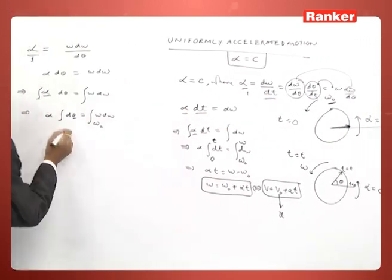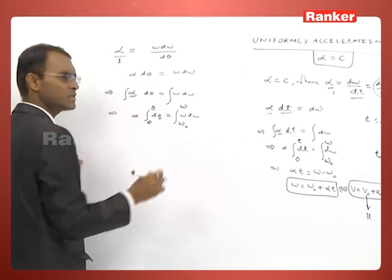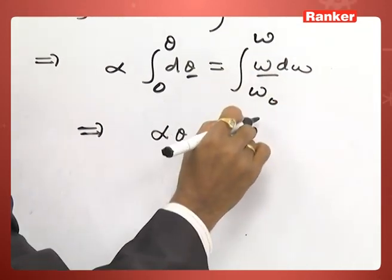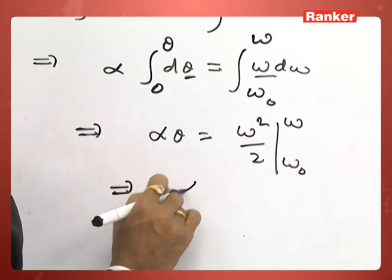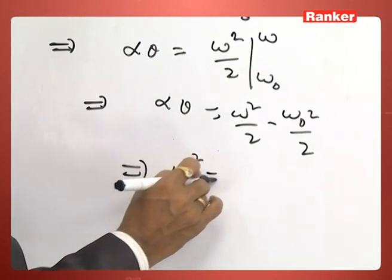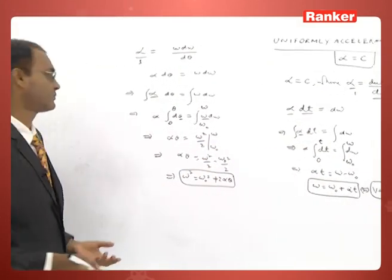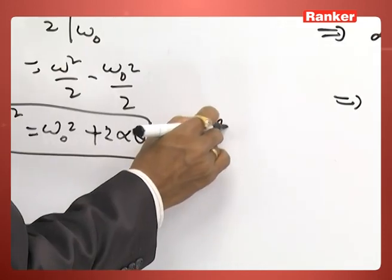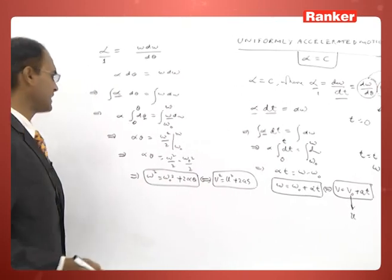The straight line was lying along the x direction, therefore theta is 0 initially, and when angular velocity becomes omega, that straight line rotates through angle theta. In this way, alpha theta equals the integral of omega d omega evaluated between the limits, giving omega squared by 2 minus omega naught squared by 2. Therefore omega squared equals omega naught squared plus 2 alpha theta. This equation is equivalent to v squared equal to u squared plus 2as in linear kinematics — this is angular kinematics.